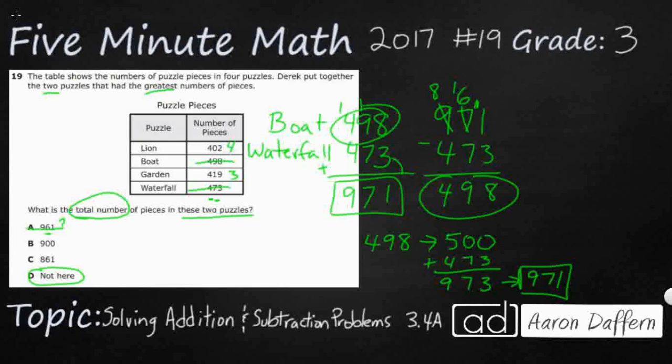Now I know how we get B. Rather than saying the two greatest, they just took the first two. Look at this. The first two puzzles are 402 and 498. If you add those up, you're going to get 10, 10, and that's a 9, so that's 900. That's where that comes from. They just didn't put them in order. And then the 861, I'm not sure where we're getting 861. 861 is like 961, just 100 less, but that's not it either. Our answer is going to be D, not here.